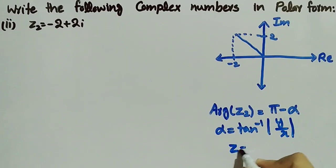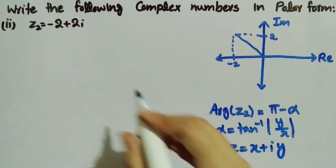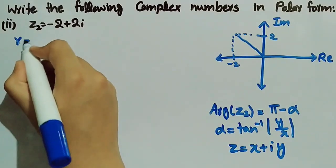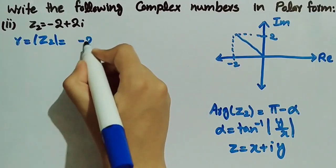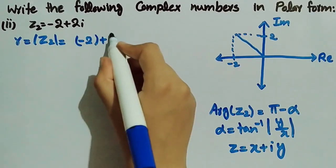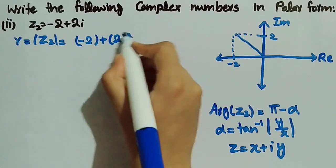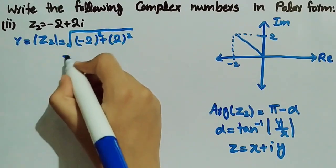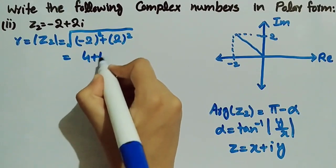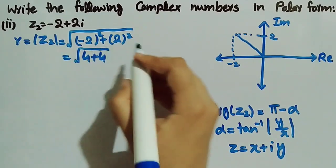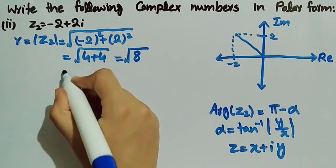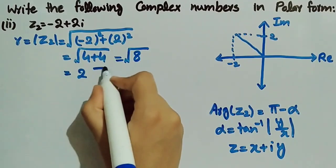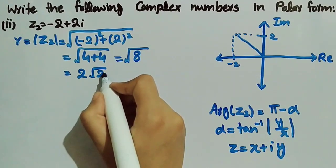First we will find the value of r, which is equal to mod of z2, which is equal to the square root of (minus 2) squared plus 2 squared, which equals the square root of 4 plus 4, which equals the square root of 8, which can also be written as 2 square root 2. So this is the value of r.